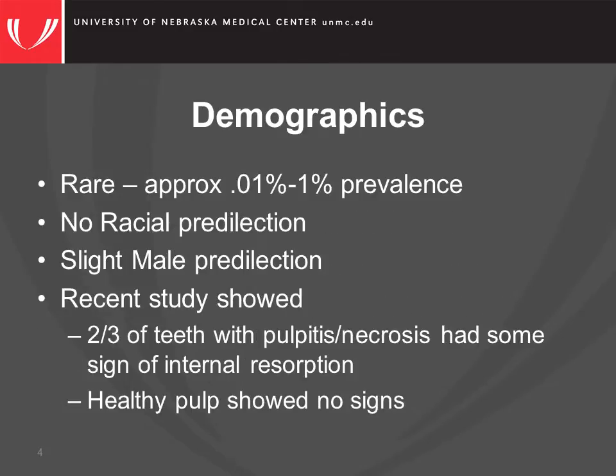Internal resorption is a relatively rare condition, with one study approximating a 0.01 to 1% prevalence. There is no racial predilection; however, there is a slight male predilection. A recent study using electron microscopy has shown that two-thirds of the teeth analyzed with pulpitis or necrosis had some sign of internal resorption, while teeth with healthy pulps showed no signs.